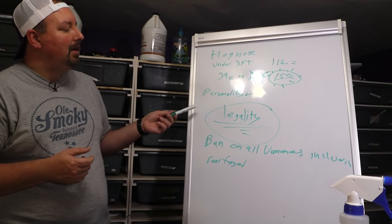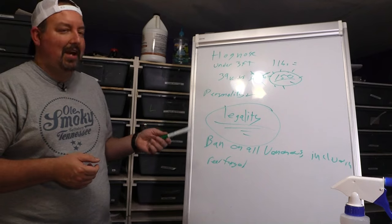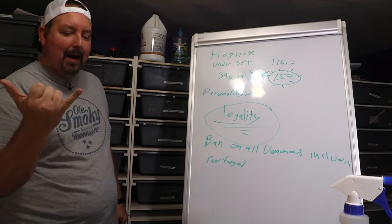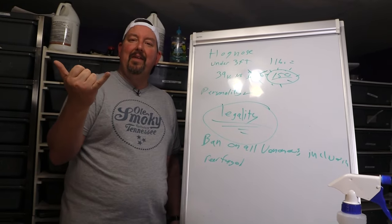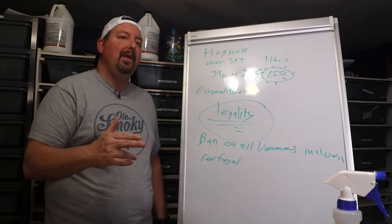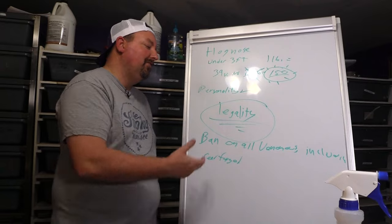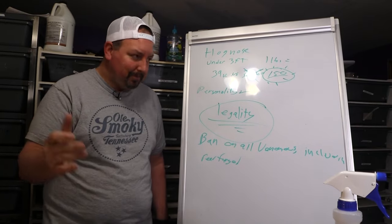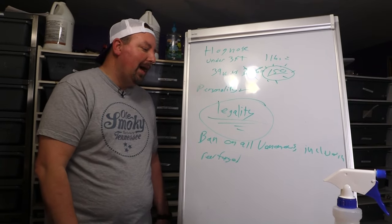You can't have a hognose. A hognose is pretty widely known to be rear fanged venomous. Look, you would have to let this snake chew on your pinky finger for about an hour to get a fang in you, and then it's going to be annoying. They're not dangerous at all.